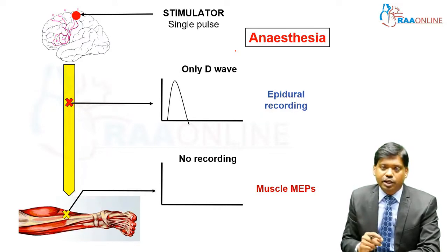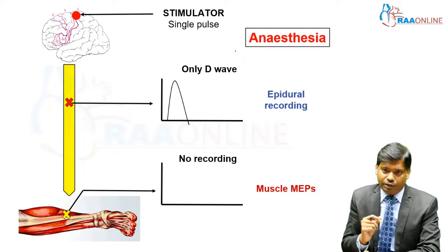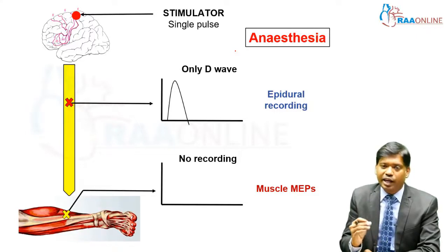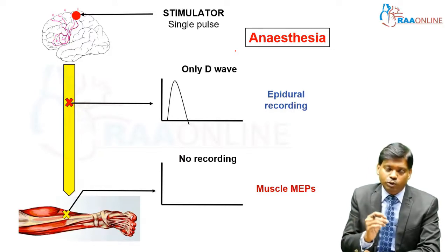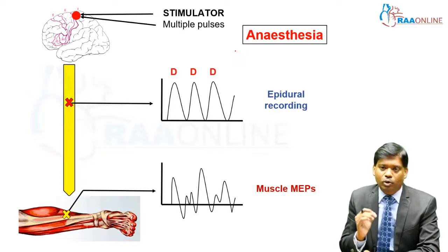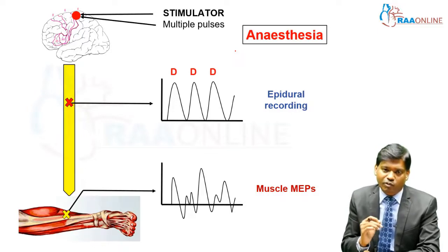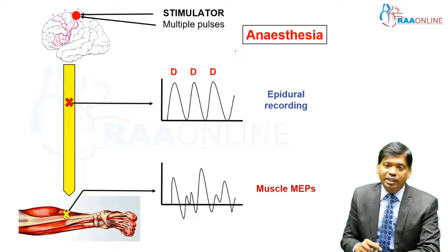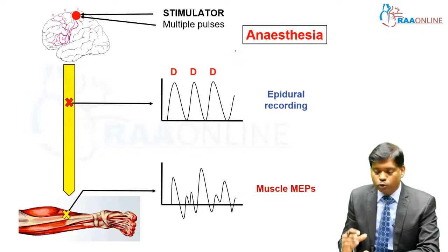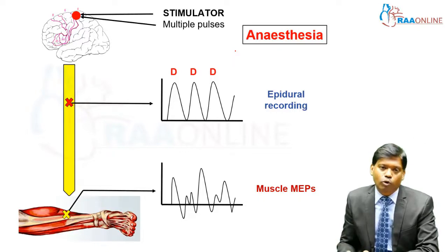However, under anesthesia, when a single pulse is given to the brain, only the direct wave will be recorded from an electrode placed in the epidural space — the indirect waves will not be recorded, and no signal will be recorded from an electrode placed at the muscular level. However, when multiple trains of stimuli or multiple pulses are given at the level of the brain, you will record multiple direct waves through an epidural electrode and will be able to record muscle MEPs from electrodes placed in the muscles.